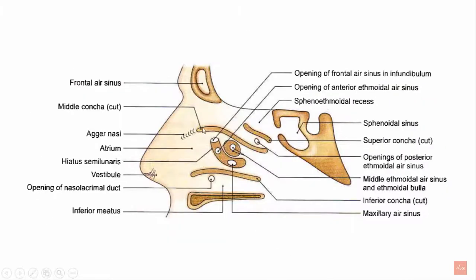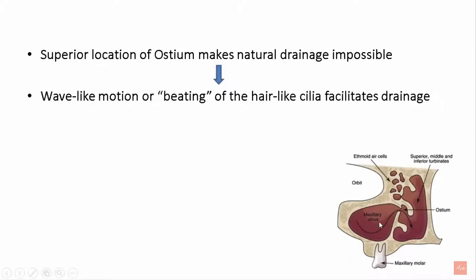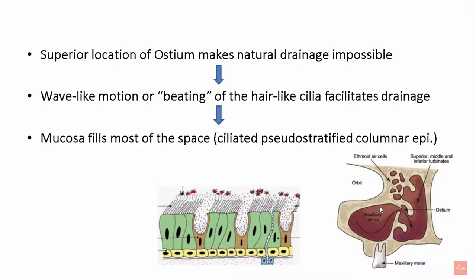In the region of the middle nasal meatus, the hiatus semilunaris is present, and the posterior lowermost region has an opening for the maxillary sinus. Due to the superior location of the ostium, natural drainage is almost impossible. To facilitate this, a wave-like beating of hair-like cilia facilitates drainage. This is a specialized columnar epithelium with tall columnar cells, goblet cells which release mucus, and cilia that propel mucus towards the opening of the maxillary sinus. Sometimes the mucosa almost completely fills the ostium.